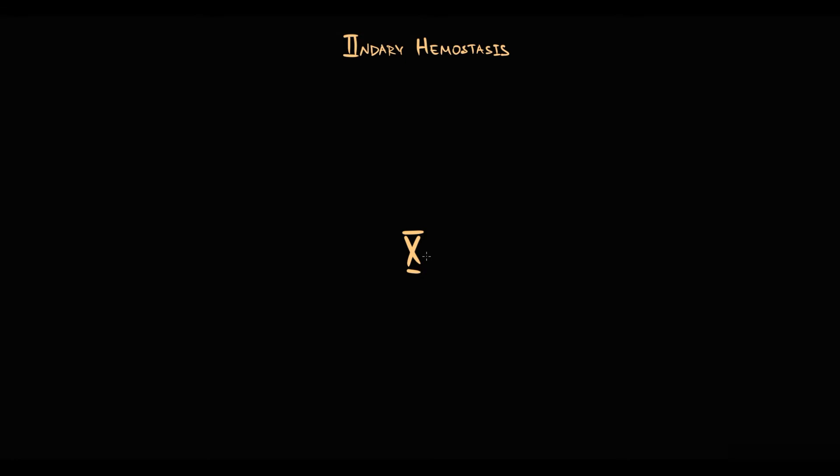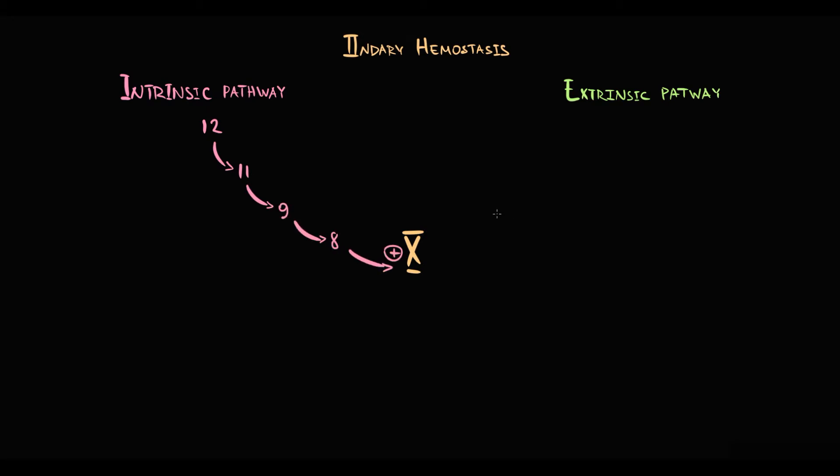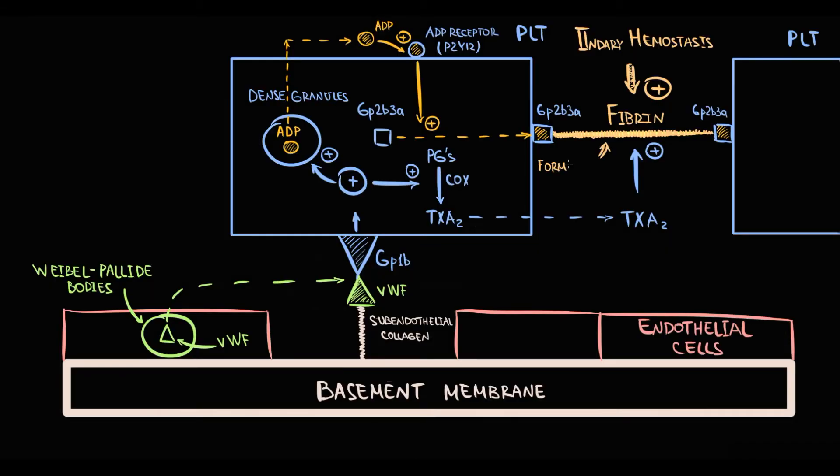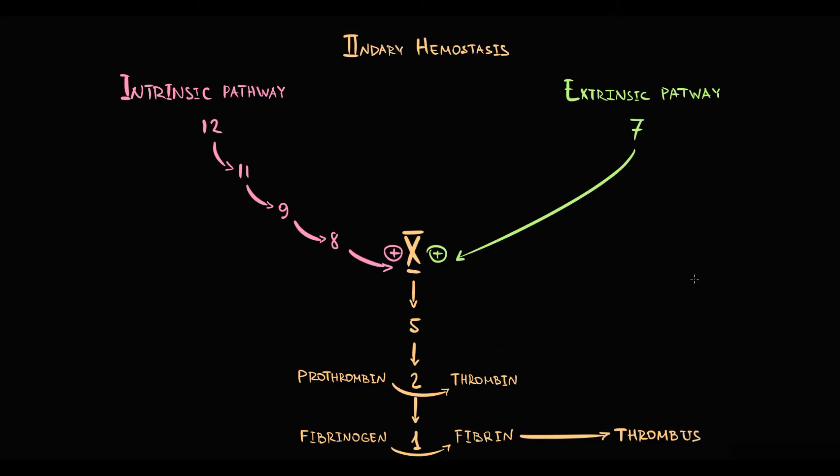The central factor of coagulation cascade is factor X. The goal of both intrinsic and extrinsic coagulation pathways is to activate factor X. Intrinsic pathway consists of factors from 12 to 8. Extrinsic pathway consists of just factor 7. Activation of factor X results in activation of factors 5, 2 and 1. Factor 2 called prothrombin that with activation becomes thrombin. Factor 1 called fibrinogen that with activation becomes fibrin. And exactly fibrin makes from platelet plug a formidable thrombus. So secondary hemostasis converts platelet plug into a thrombus. To assess the extrinsic pathway, we use prothrombin time and international normalized ratio. For assessment of intrinsic pathway, we use partial thromboplastin time.